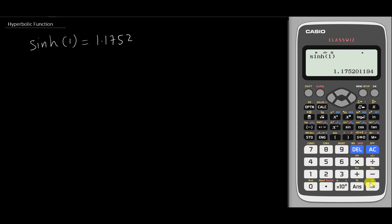But actually how do we get this value, and how do we know if this value is right or wrong? You need to know the expression for the hyperbolic function. So let's say I call hyperbolic sine x. By understanding the formula, you will know how to get this value.